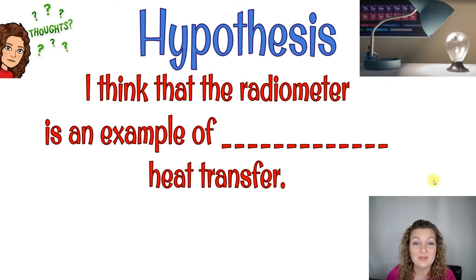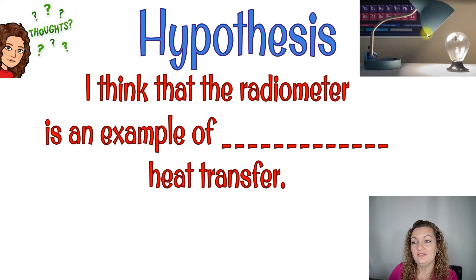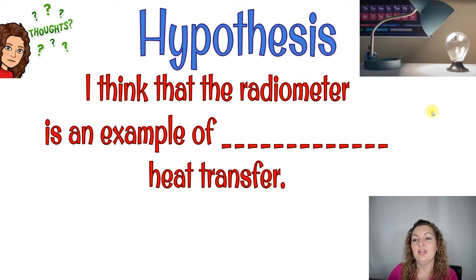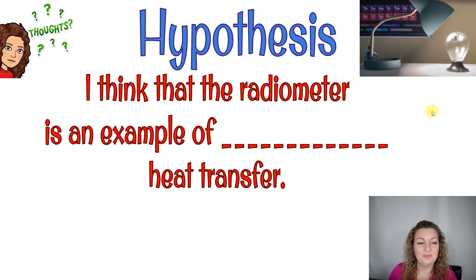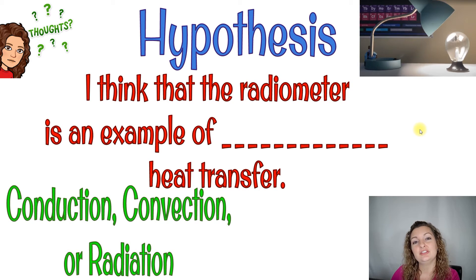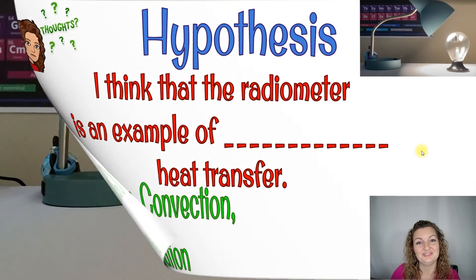All right, guys, our last experiment. We're going to take our lamp, turn on the light, and have it shine down on our radiometer — notice we're not having it touch, okay? We're going to see what happens. But first, we need to make our hypothesis: I think that the radiometer is an example of blank heat transfer — conduction, convection, or radiation? Go ahead and put what you think.